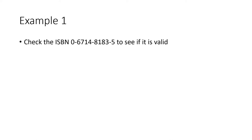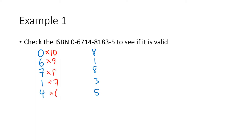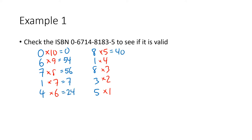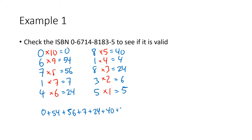For example, we have an ISBN with digits 0, 6, 7, 1, 4, 8, 1, 8, 3, 5, and the weight pattern is 10, 9, 8, 7, 6, 5, 4, 3, 2, 1. Computing the products: 0, 54, 56, 7, 24, 40, 4, 24, 6, 5. Adding them up — 0 plus 54 plus 56 plus 7 plus 24 plus 40 plus 4 plus 24 plus 6 plus 5 — gives us 220.